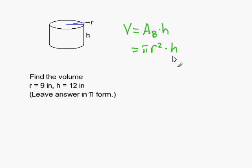Now that we know this, we can substitute because we're given the radius, which is 9, and the height, which is 12.